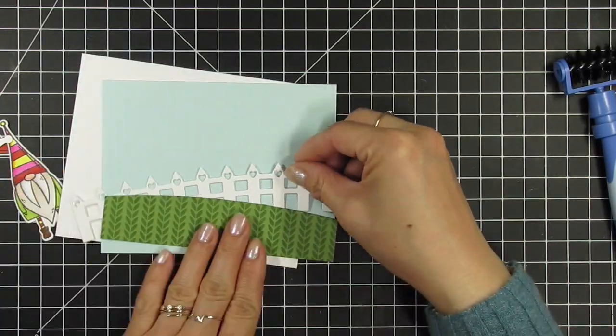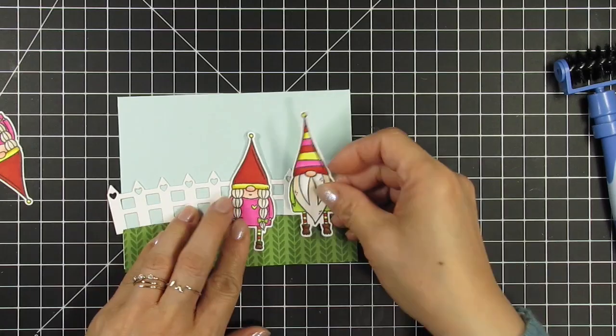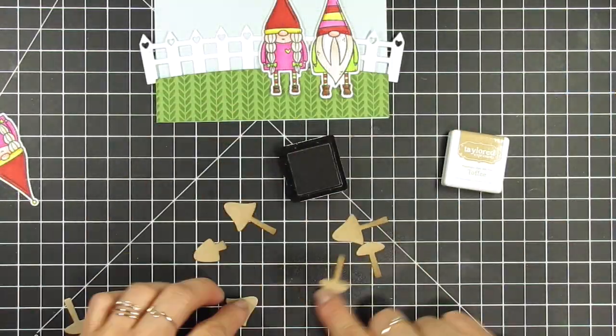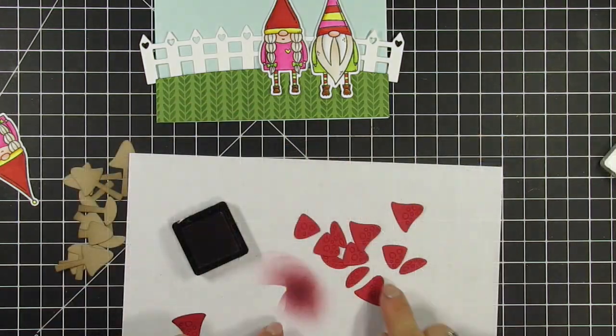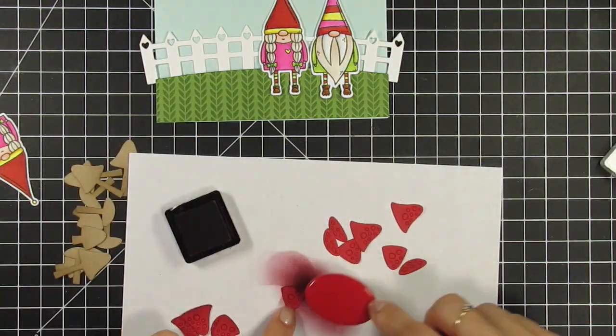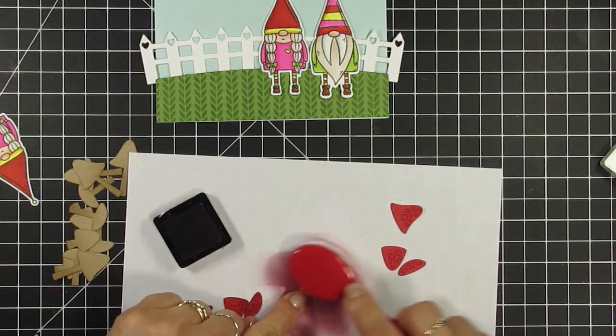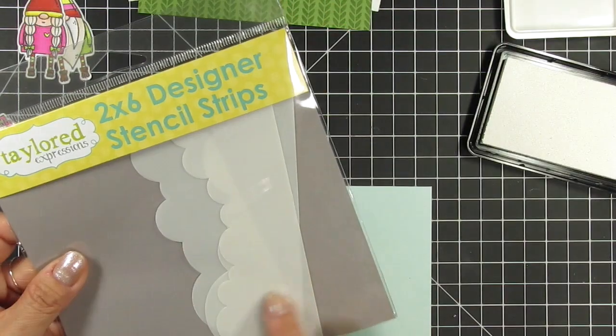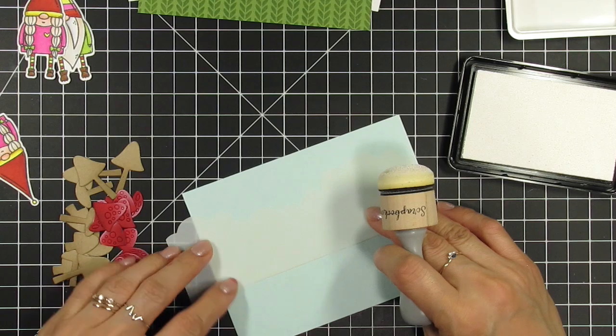Then I use toffee ink to blend the bottoms of the mushroom stems which I've die cut from toffee cardstock. For the tops of the mushrooms which I've die cut from cherry pop cardstock, I ink blend the bottom with mulled wine ink and the tops with sugar cube ink to give them extra dimension and to make them look a little moldy.